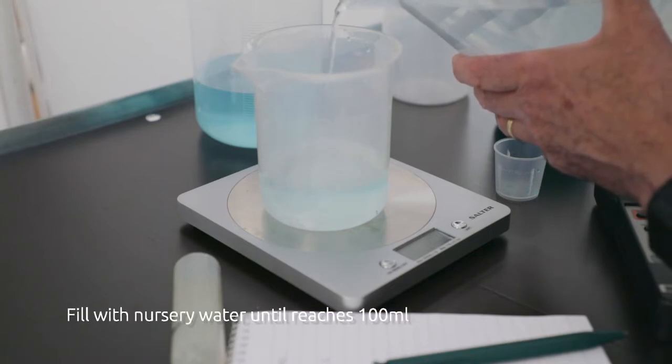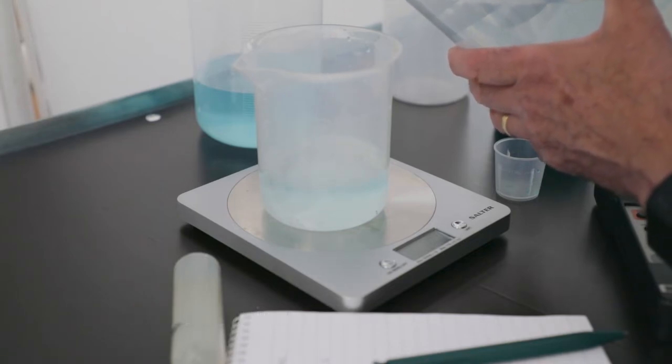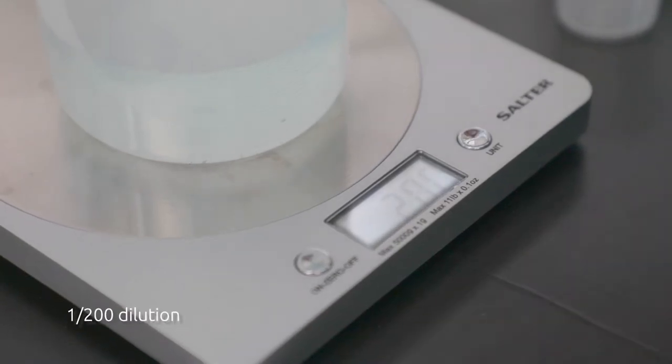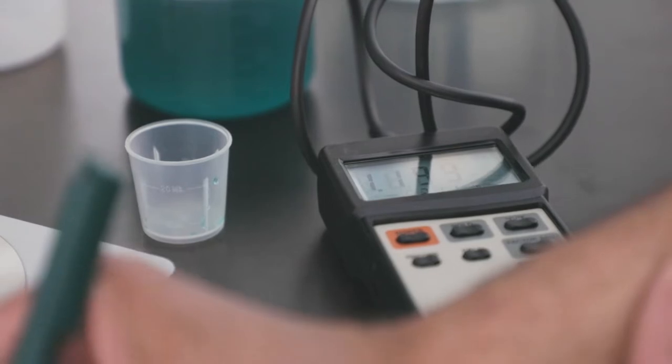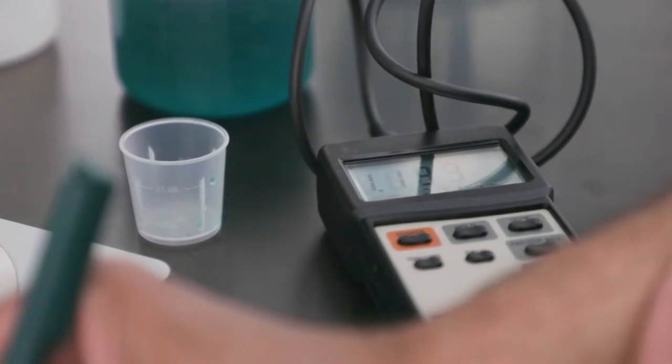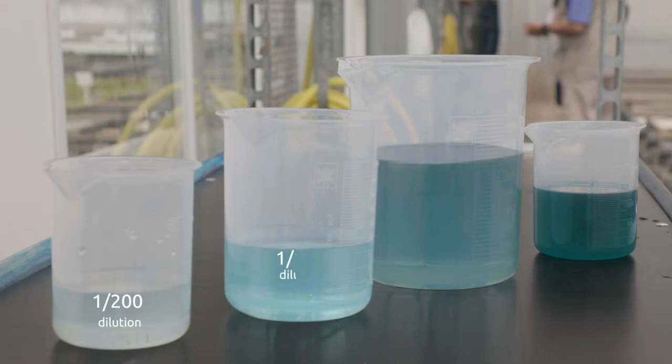And then similarly to last time we make a measurement of that one in two hundred diluted solution which would be our third calibration point. And this time we're getting a reading of one thousand one hundred and ninety three microsiemens. So we now have the three point for our calibration curve.